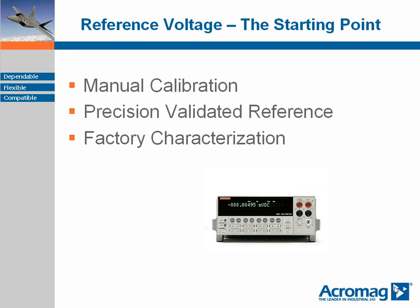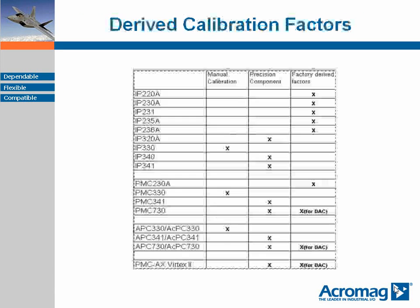At Acromag we use three methods to calibrate a module to a precision voltage reference. For analog input modules we use a manual calibration method, or for newer board designs we use a precision validated on-board reference. For digital output boards we use a factory generated gain and offset reference to a precision voltage source, written uniquely into flash memory on each board. This table shows the most popular analog boards and the techniques used at our factory during the manufacturing process to derive the base calibration.